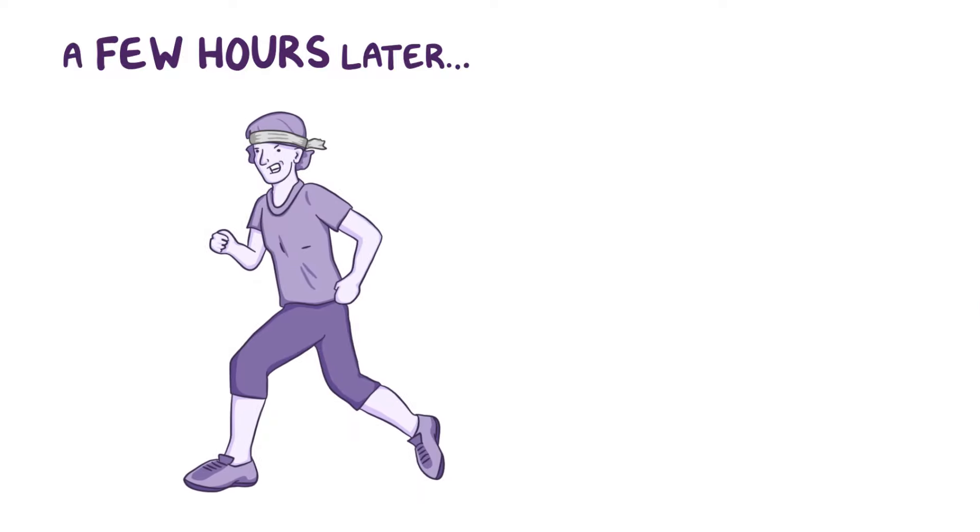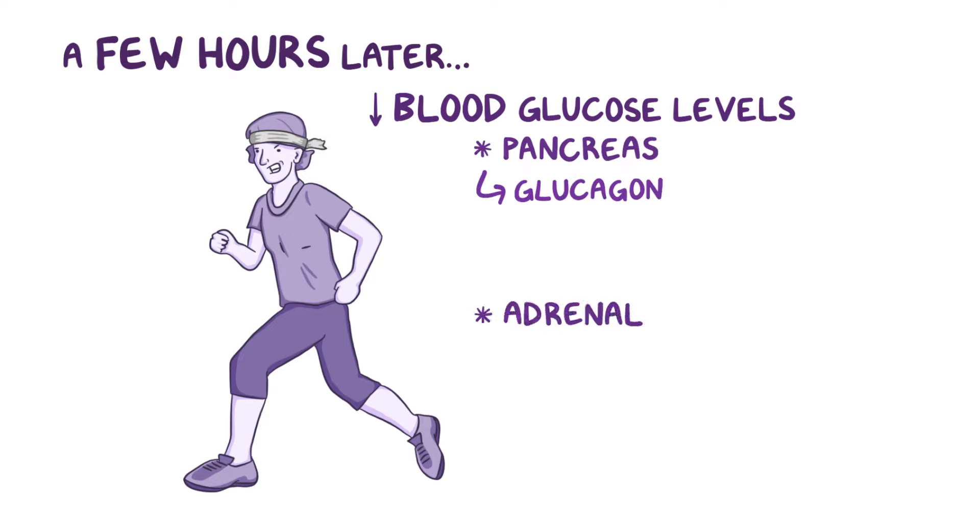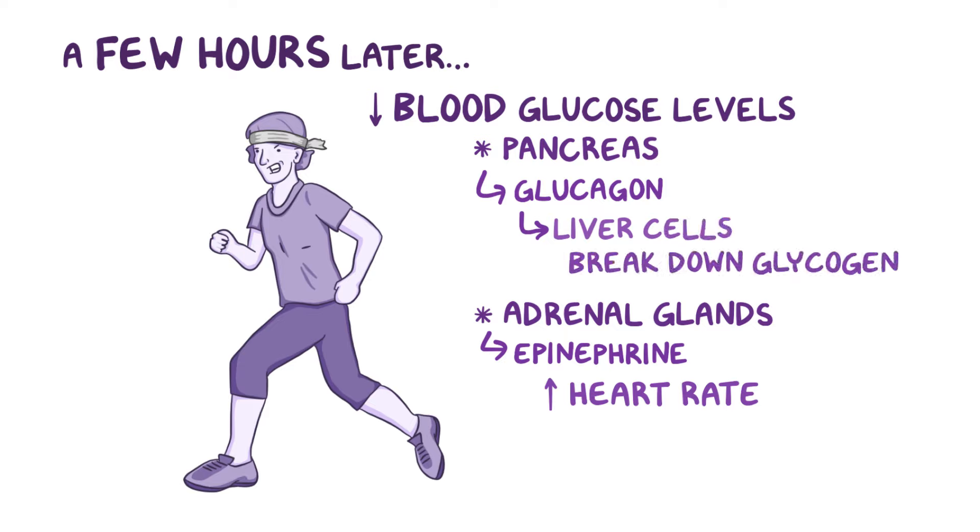Now let's say it's been a couple of hours since those tacos, and you decide to go for a run. Because you're fasting, your blood glucose levels take a dip. In response, the pancreas secretes the hormone glucagon, and the adrenal glands secrete epinephrine to increase your heart rate. It turns out that glucagon tells the liver cells to break glycogen down into individual glucose molecules, and epinephrine tells skeletal muscle cells to do the same thing.